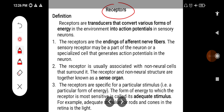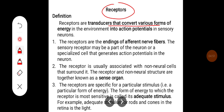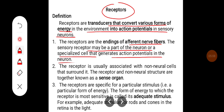Coming to the receptors. Receptors are transducers that convert various forms of energy in the environment into action potential in sensory neurons. The receptors are endings of the afferent nerve fibers. The sensory receptor may be part of the neuron or a specialized cell that generates action potential in the neuron. The receptor is usually associated with non-neural cells that surround it; together they are known as a sense organ. Receptors are specific for a particular stimulus — the form of energy to which the receptor is most sensitive is called its adequate stimulus. For example, the adequate stimulus for rods and cones in the retina is light.